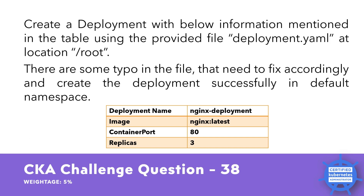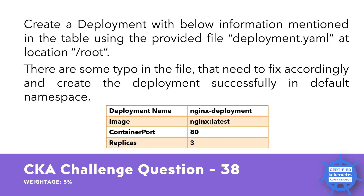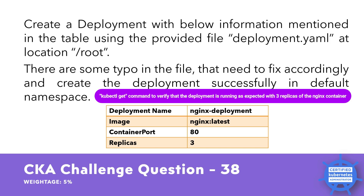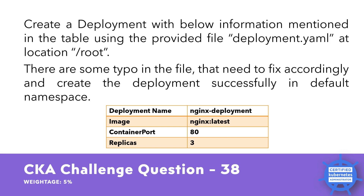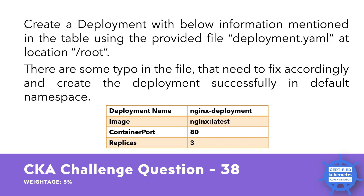After correcting the typos in deployment.yaml to match the requirements, use the kubectl apply command to create the deployment in the default namespace. Then use kubectl get to verify the deployment is running as expected with three replicas. Additional configuration options such as environment variables, resource requests and limits, and liveness and readiness probes can be added to further customize the deployment.